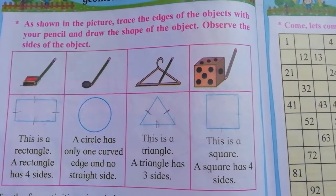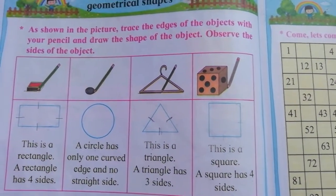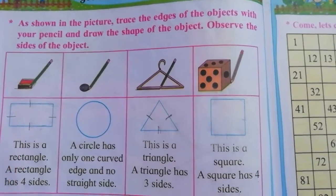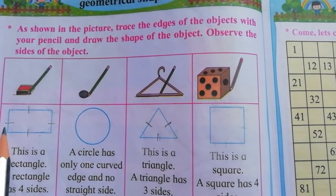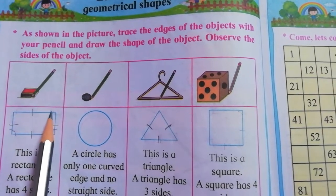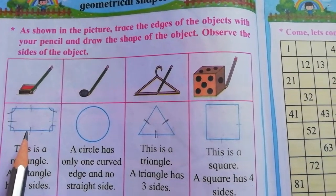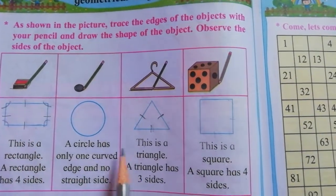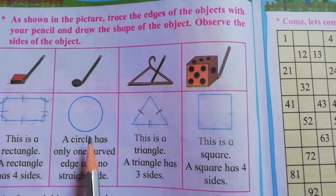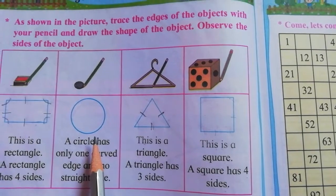Now let's see corners of the shapes. This is a rectangle. It has four corners: one, two, three, and four. Now next is circle. It does not have any corner.